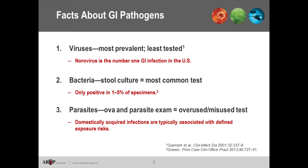For parasites, the ova and parasite exam is probably one of the most overused and misused tests in clinical pathology. Despite that, there is some predictive ability to know when parasite testing makes sense. For domestically acquired infections, there's typically an association with a known exposure — for example, cryptosporidium is associated with contaminated water supplies or swimming pools, and cyclospora with clustered diarrhea associated with a common produce source.